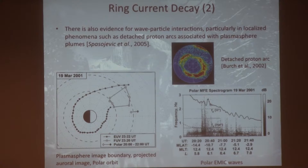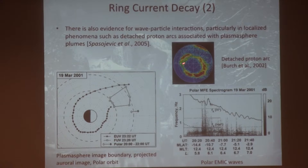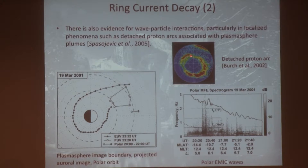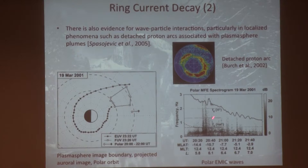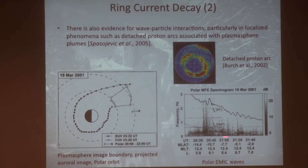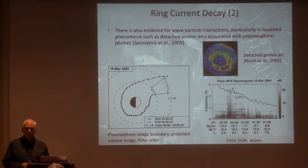This is from IMAGE. One thing we discovered were detached proton arcs, because IMAGE with Stephen Mende's camera had the ability to see proton auroras separately from electron auroras. We found they were associated with drainage plumes. Here's the mapping of a similar arc into the equatorial plane; here's the boundary of the plasmasphere from imaging. At the same time, DE was measuring ion cyclotron waves — not exactly right there, but close. Here you have hydrogen and helium cyclotron frequency — so we know these regions of detached plasma or plasma plumes are rich with these waves.